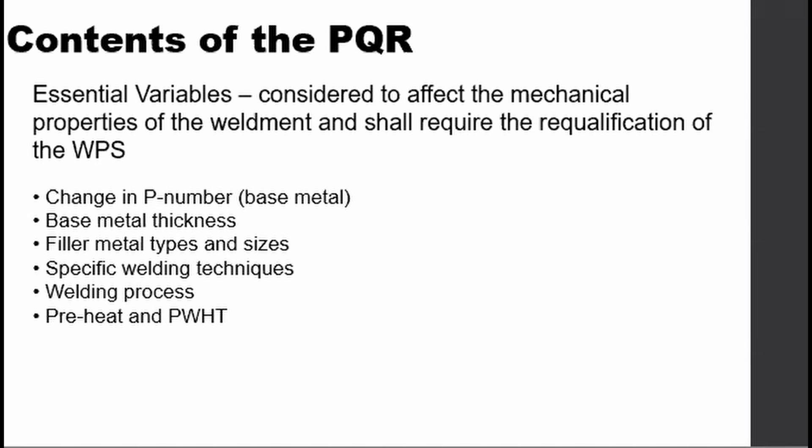For example, base metal definitely affects mechanical properties; thickness because it affects the allowable stress; filler metal types because the weld metal and base metal must have equal strengths; and heat treatment like preheat and post-weld heat treatment because it affects the hardness and weldability of the metal. Later I will show the tabulation of the different parameters needed for the essential variables.